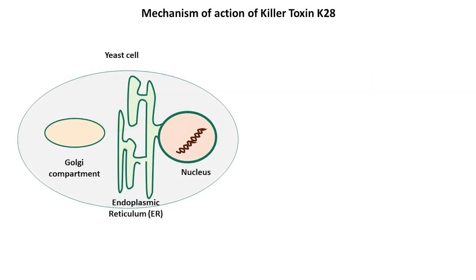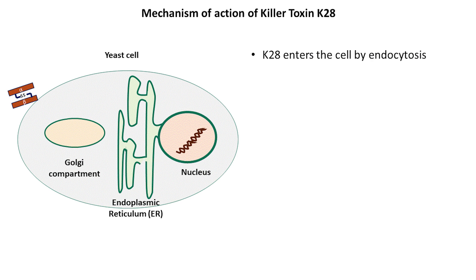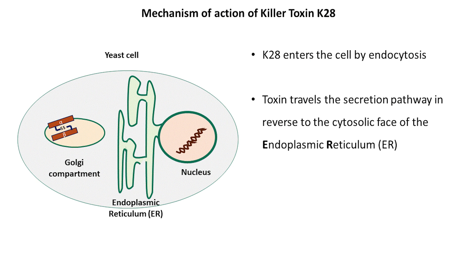Now let's look at the mechanism of action of K28 toxin. After binding to the surface of a sensitive cell, killer toxin K28 enters the cell through endocytosis, an active transport of molecules into the cell. After being internalized, the toxin follows the reverse route of the secretion pathway, reaching the cytoplasm, specifically the cytosolic side of the endoplasmic reticulum.